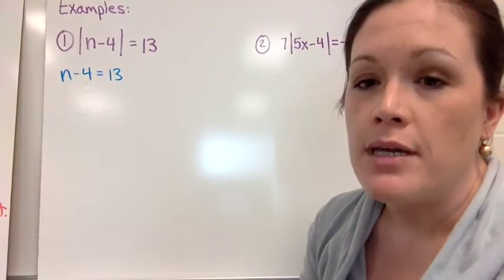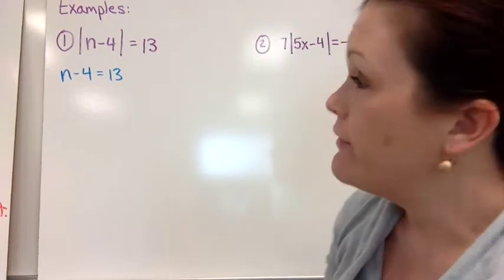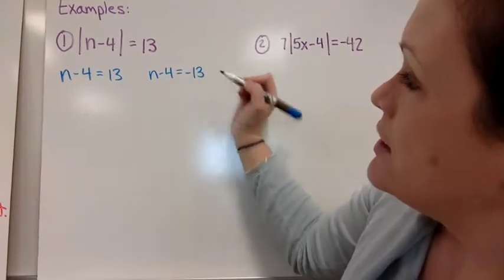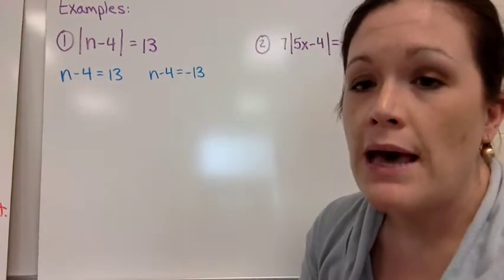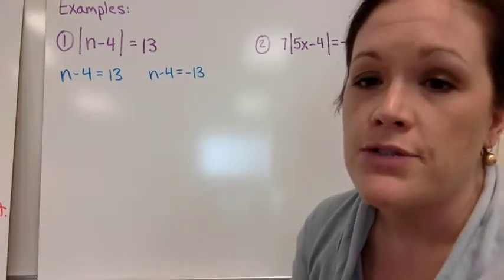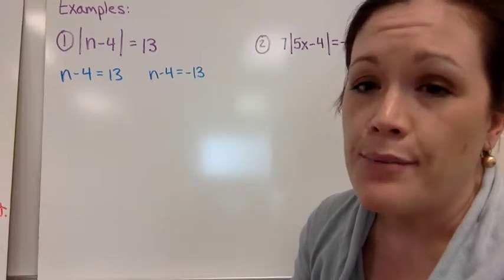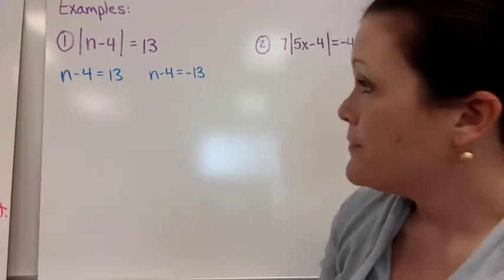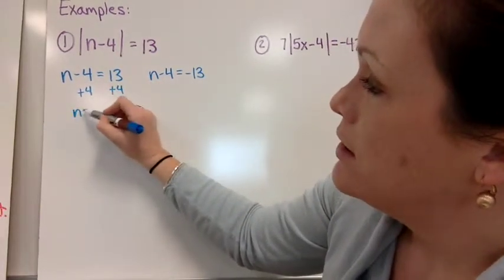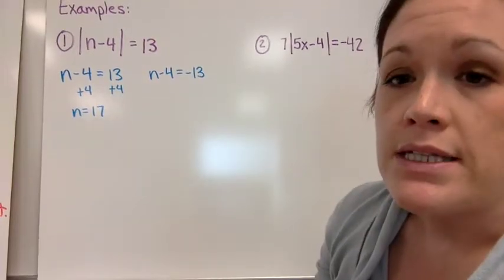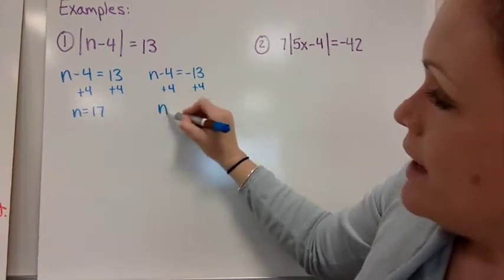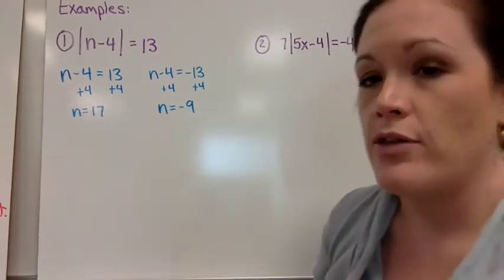By the negative equation, I mean make one side of your equation negative. So I say n minus four equals negative 13. We're allowed to make either side negative — I chose to make 13 negative because it's easier than making n minus four into negative n plus four. So we solve: add four to both sides and we get n equals 17 for one value, and add four again to get n equals negative nine for the other.